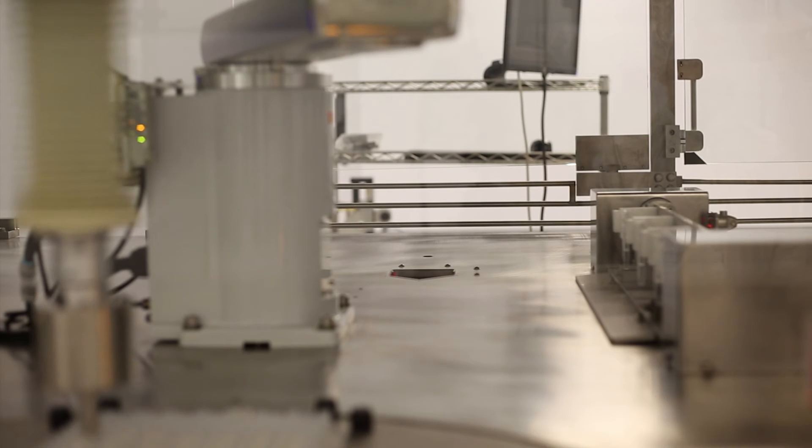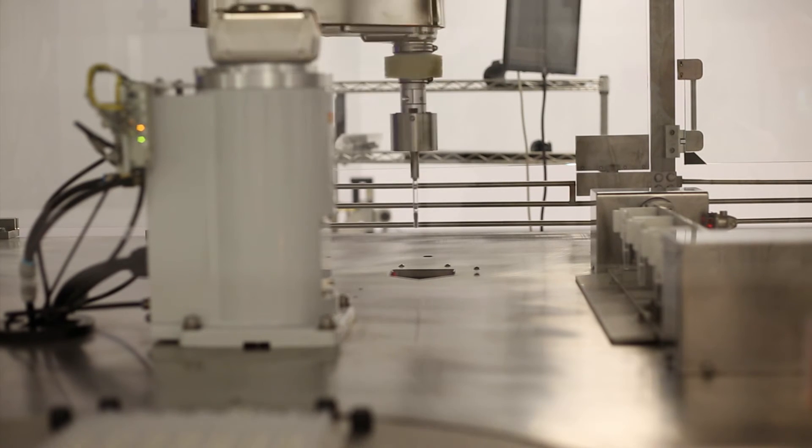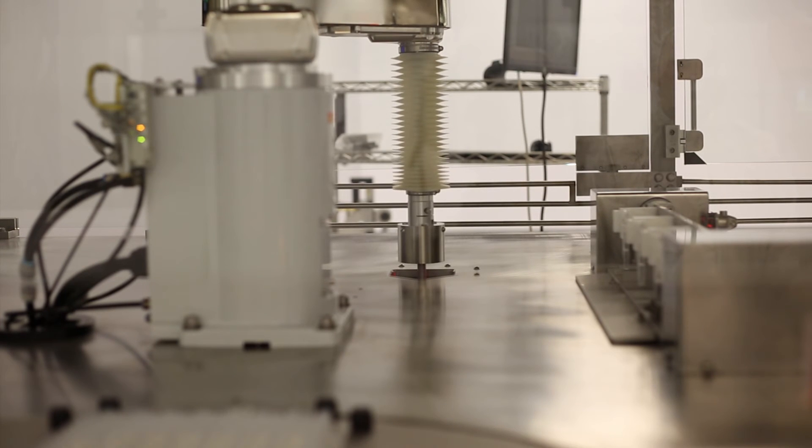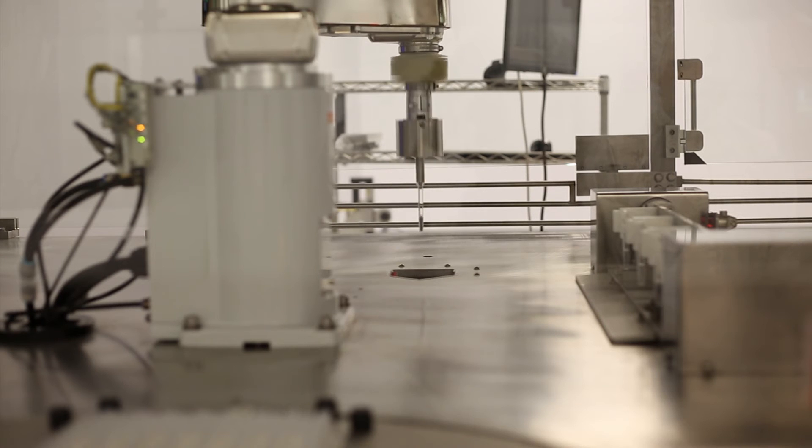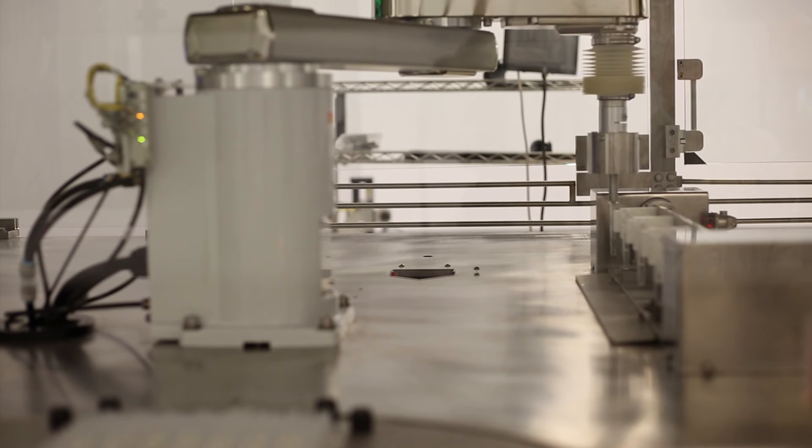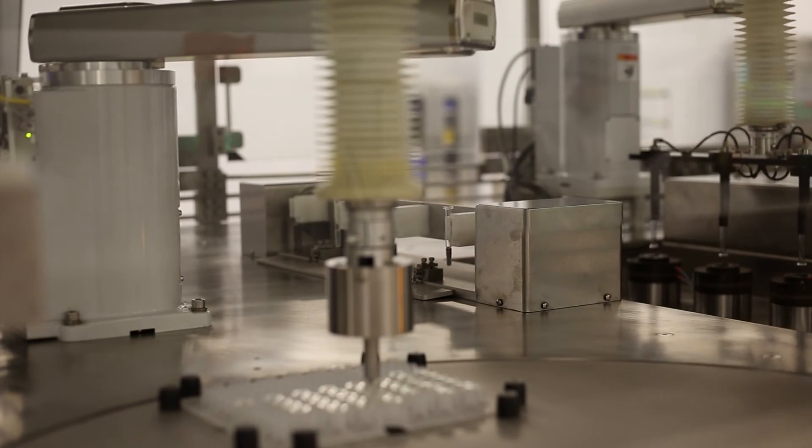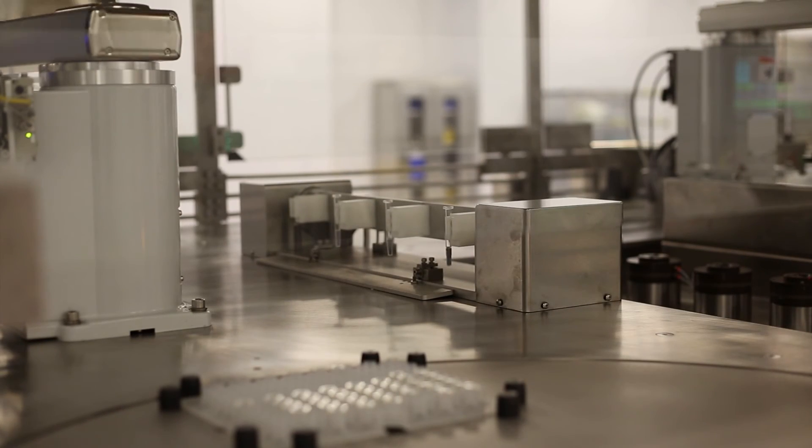The syringe coating line is a fully automated coating and inspection system equipped with local laminar airflow systems that maintains the parts in an ISO class 5 environment for particulates. The line is capable of coating 1 ml long staked needle syringes.